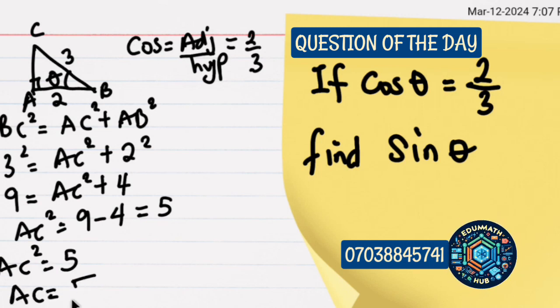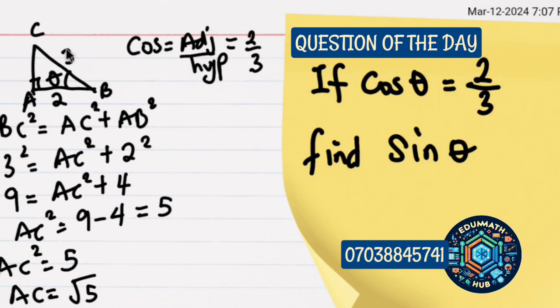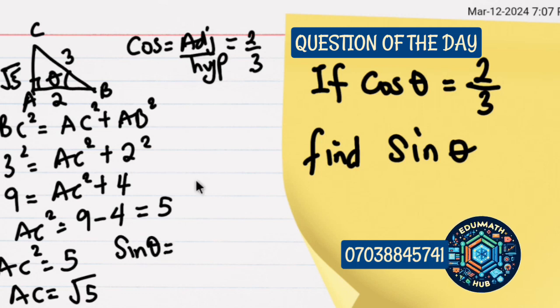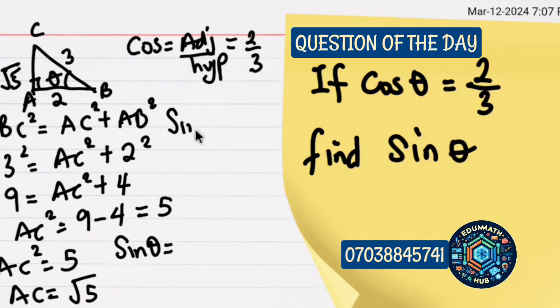Then AC will be the square root of 5. So that means the value of AC is root 5. Now let's find sin θ. Remember, sin is opposite over hypotenuse.